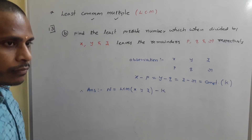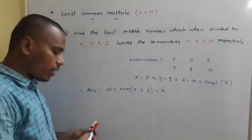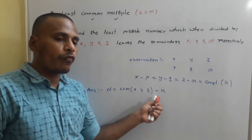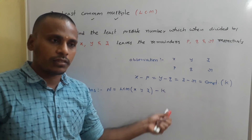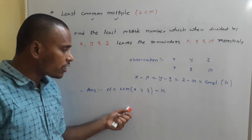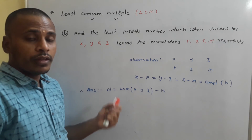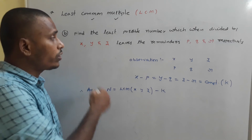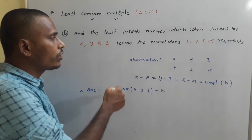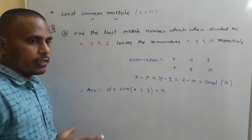If the difference is a constant k, then the required number N is simply LCM(x, y, z) − k. The explanation is the worked example with 18, 35, 42 we just discussed. You just memorize this rule: if the differences are constant, directly write the required number as LCM minus k to get the answer.